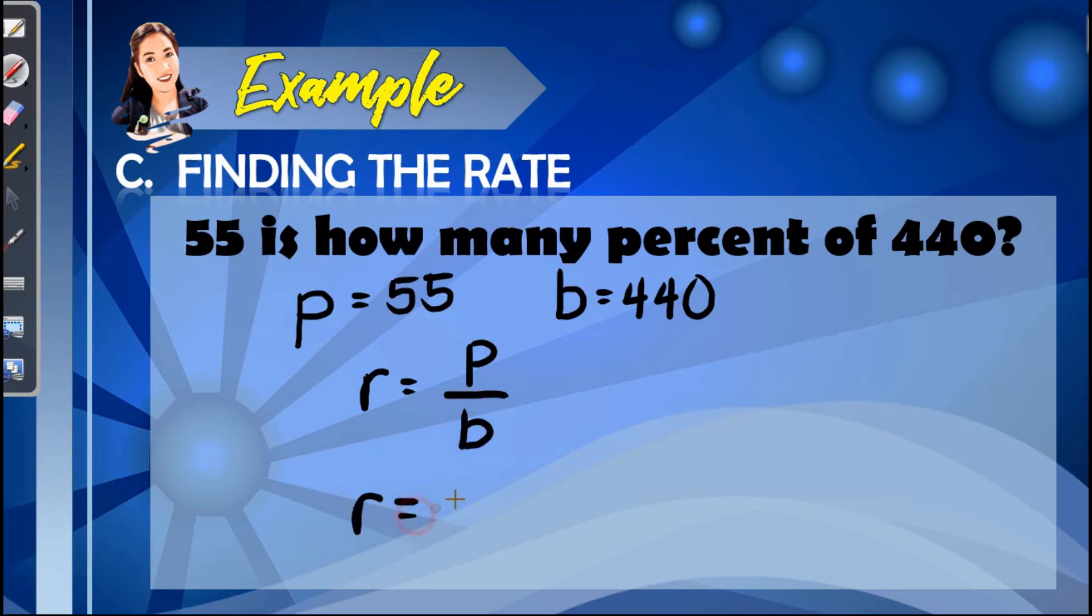Let us do substitution, so we have R is equal to 55 over 440. So R is equal to 0.125, or in percent, that is 12.5%, moving the decimal point two places to the right.